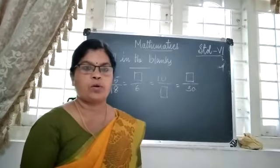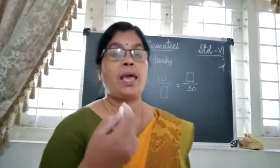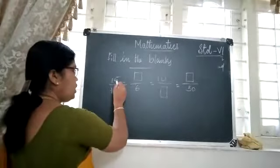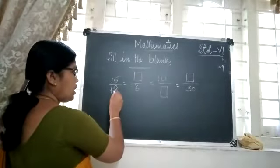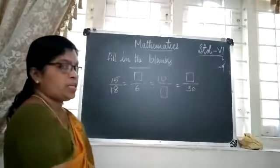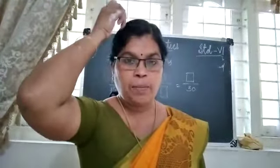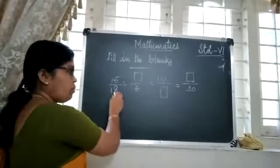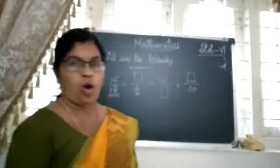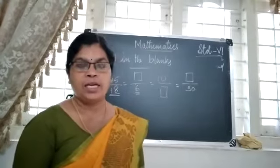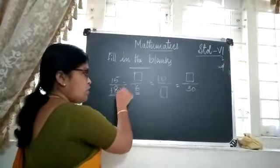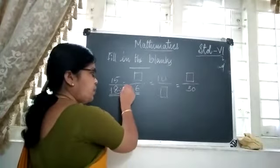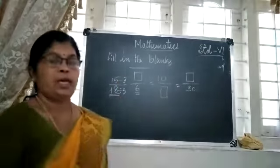The same way we find equivalent fractions, we have to do here also. For equivalent fractions, we multiply or divide the same number in both the numerator and denominator. Here the denominator is 18, and in the next fraction the denominator is 6. Since 6 is smaller than 18, we have done division. By which number do we divide 18 to get 6? Six 3's are 18, so we divide by 3. Similarly, we divide the numerator by 3 as well.